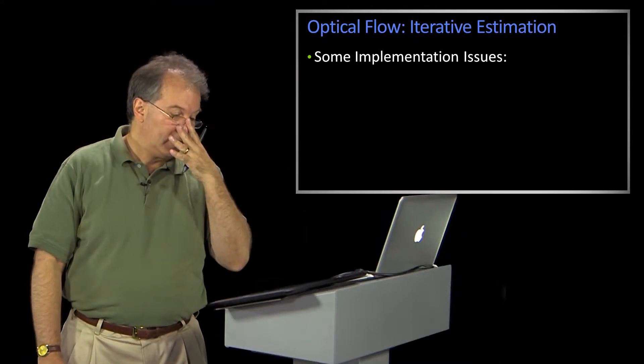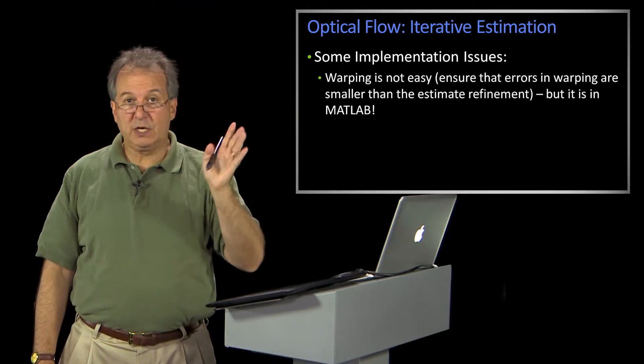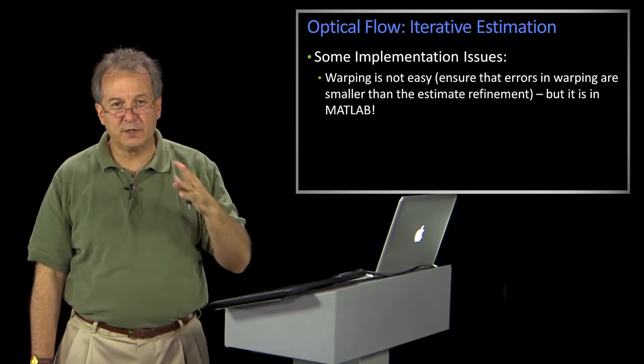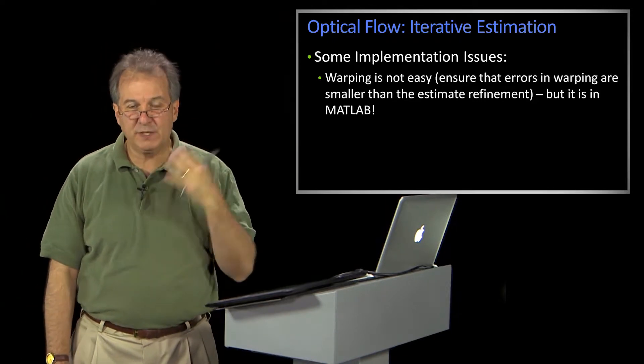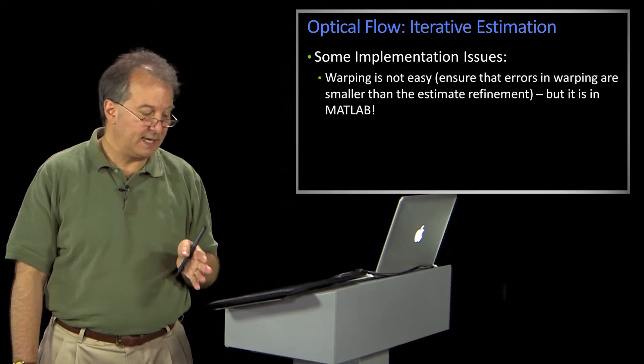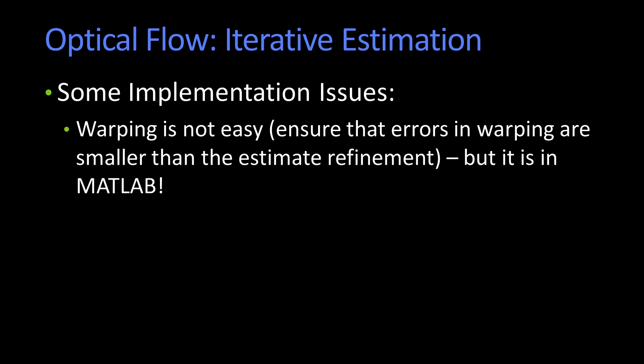A couple of implementation issues. In general, warping is one of those things that in principle should be really easy. In practice, you always make mistakes. MATLAB does a very fine job of allowing you to do warping in particular ways, so if you're using MATLAB or Octave, it's easy. And within Python, NumPy and OpenCV accomplish it as well.